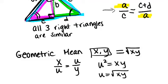So for example, if you had two numbers, 5 and 7, and you wanted to know their geometric mean, you're trying to figure out a number such that 5 over u will be the same thing as u over 7.